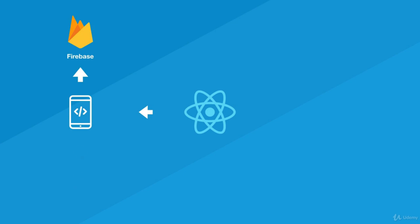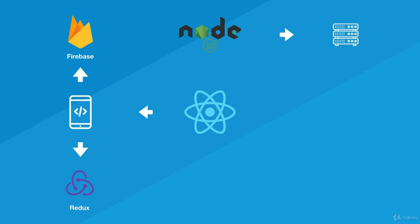Once that is done, we will learn how to use Redux with React. Then we will learn what Node is and how it works. Once we know what we're using to build our applications, we will not use Firebase anymore and will build our own server. Since our applications will need a database, we'll learn MongoDB and Mongoose from scratch. Then we'll learn how to take requests, authenticate users with tokens, and build our own API.